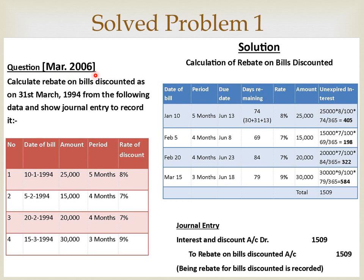As on 31st March 1994, from the following data, show the journal entry to record it. The issue date of the bill is given, the face value of the bill is given, the maturity period of the bill is given, and the discount rate is given in the question. Solution: Calculation of rebate on bills discounted.